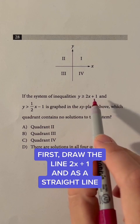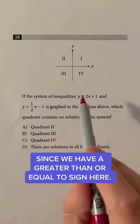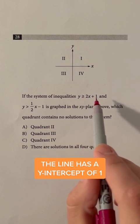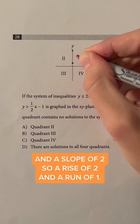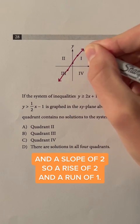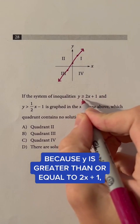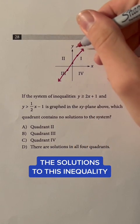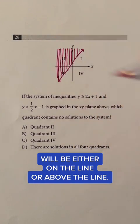First, draw the line 2x plus 1 as a straight line since we have a greater than or equal to sign here. The line has a y-intercept of 1 and a slope of 2, so a rise of 2 and a run of 1. Because y is greater than or equal to 2x plus 1, the solutions to this inequality will be either on the line or above the line.